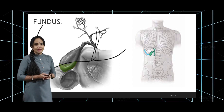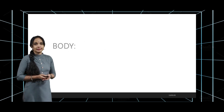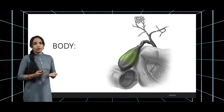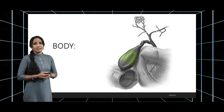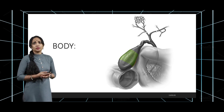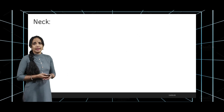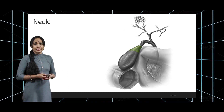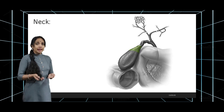This point is called Murphy's point, and we will see why this is important shortly. The body is the main space of the gallbladder; it has a honeycomb appearance because the mucosa is highly folded.